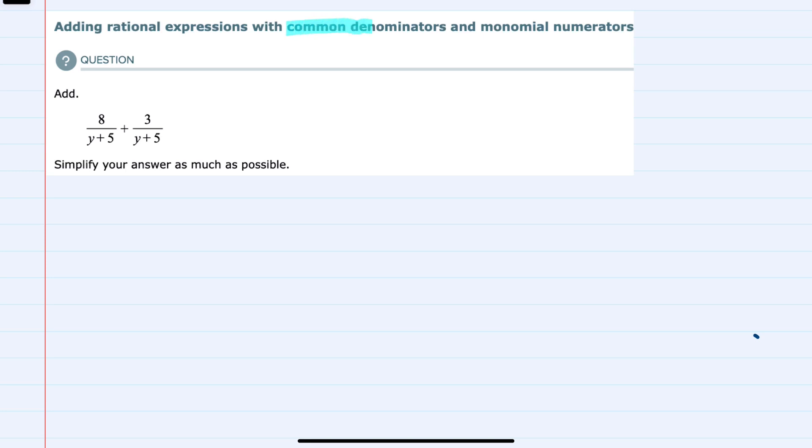We're asked to add, and we already have common denominators. In both of these fractions, the denominator is y plus 5. So we won't have to find a common denominator. And we know that when we add fractions,